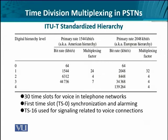In the European hierarchy, 32 such 64 kilobits per second channels are multiplexed together to create a bit stream of 2,048 kilobits, or 2.048 megabits per second. Of these 32 channels, 30 channels are for voice. The first time slot — that is channel 0 — is for the purpose of synchronization and alarms. The 16th time slot is used for establishing voice connections, especially for signaling.